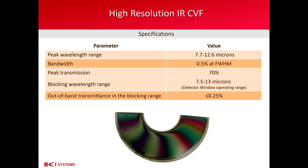This is a very special type of CVF in the range of 7.7 to 12.6 microns. What is special about it is that the width of the peaks at the different positions around the circumference are very, very tight, very narrow.